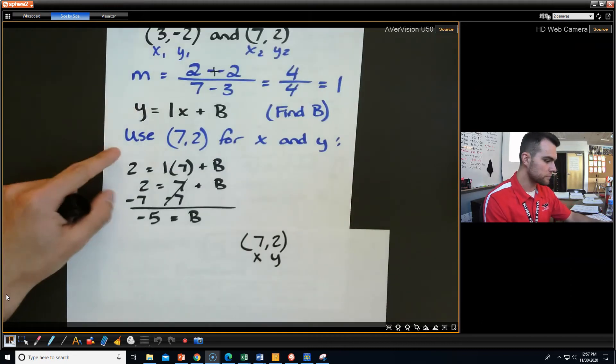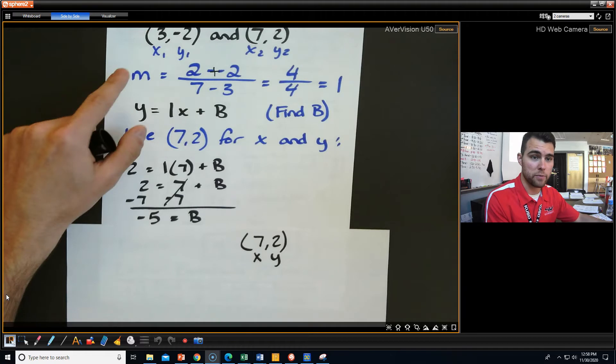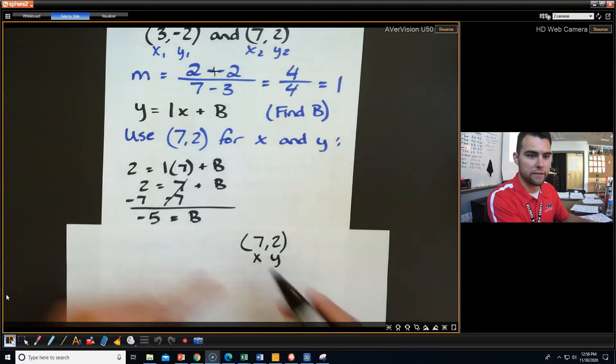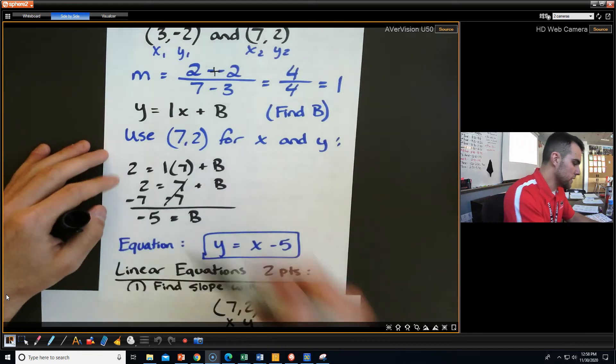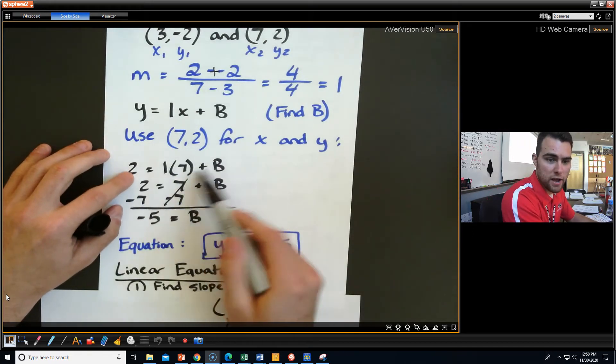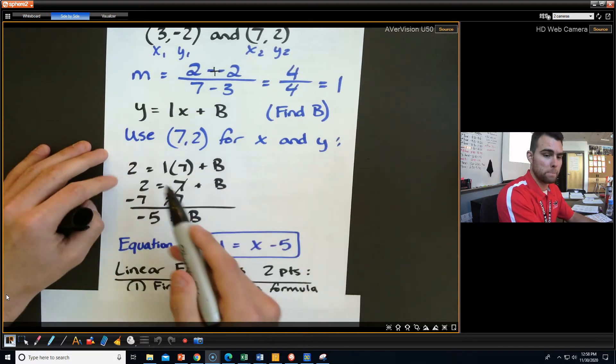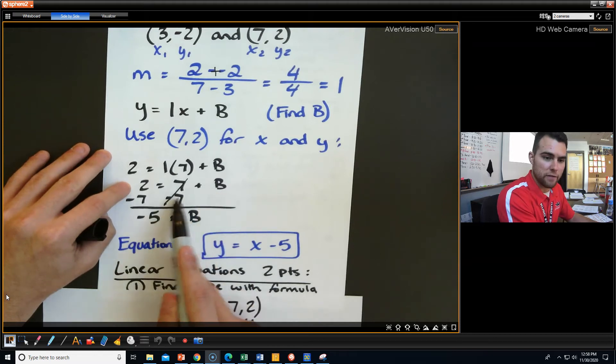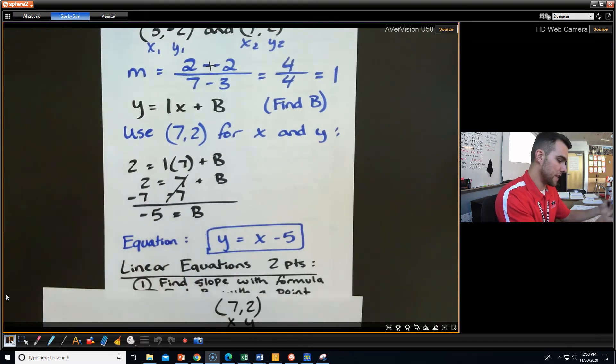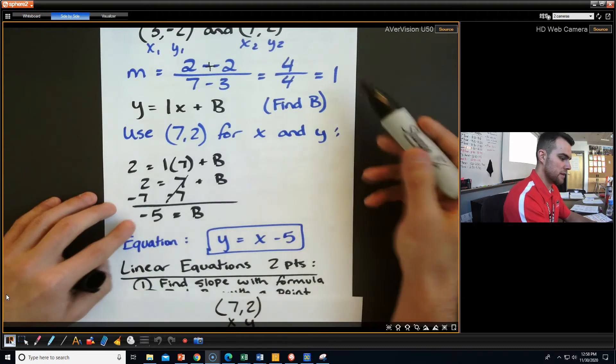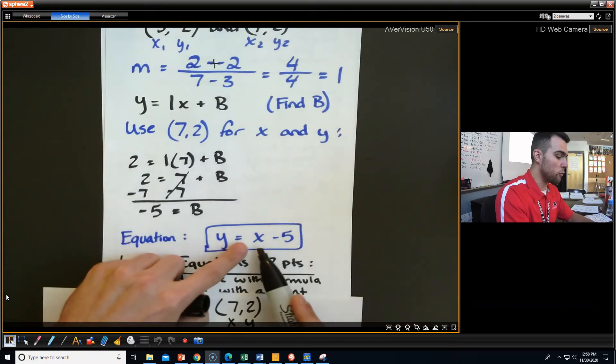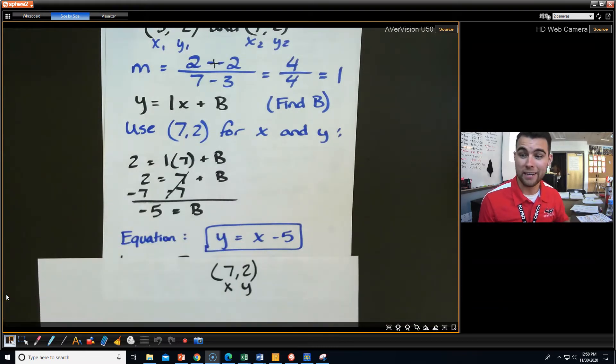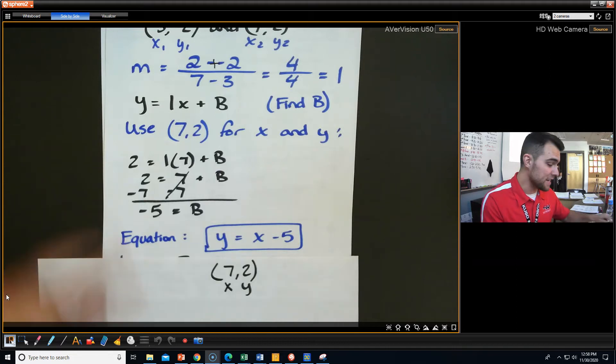So I'm going to do that. And I pick 7 and 2. It doesn't really matter. I could pick 3 and -2, but I chose what I thought was easier, which was something without negatives. So I throw this stuff in. 7 goes in for x, 2 goes in for y, and now I can solve for b. And you can see kind of how this breaks down to get b by itself. I have to subtract 7 from both sides. So I get -5 equals b. And there's my b. There's my slope. So y equals my 1x minus 5. And that is my equation of that line given just two points. That's all we need, actually.